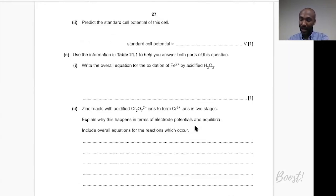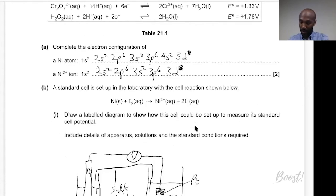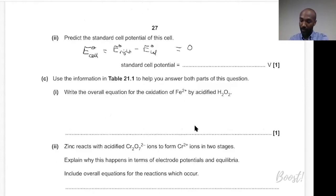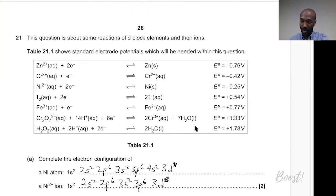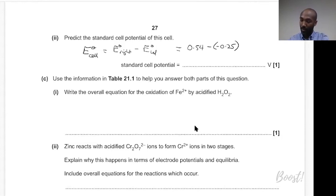Part C asks us to predict the standard cell potential. E°cell = E°(right) − E°(left) = 0.54 − (−0.25) = 0.54 + 0.25 = 0.79 volts.